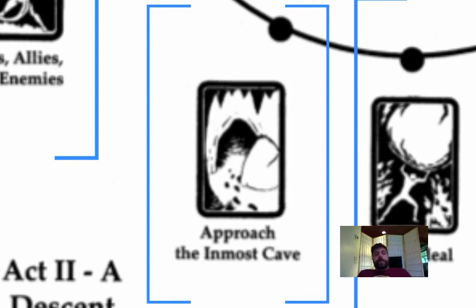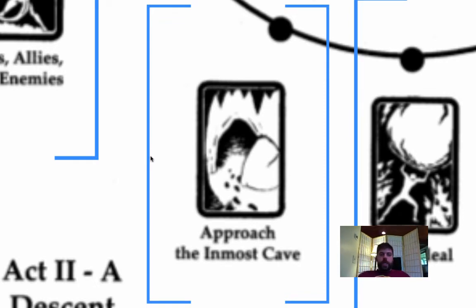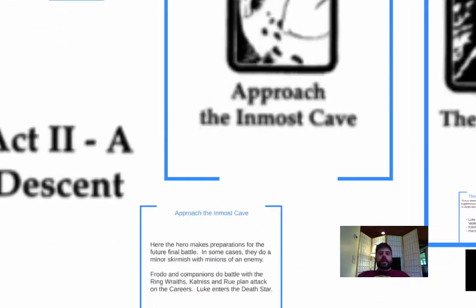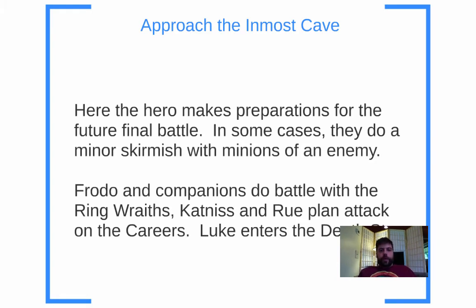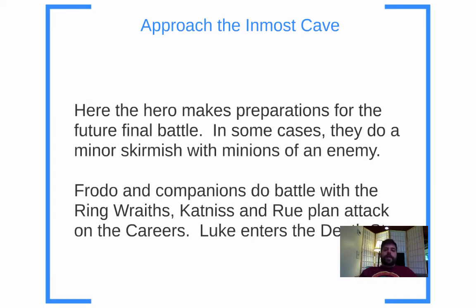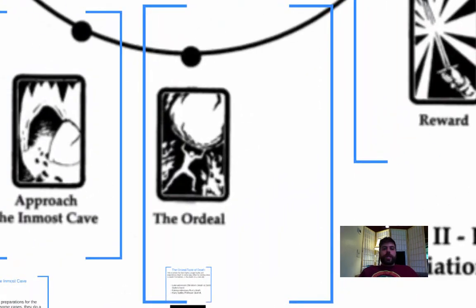The next step on the hero cycle is the Approach to the Inmost Cave — that's when the hero really knows things are going to get real. It's the entrance to the biggest conflict. The hero makes final preparations for the future final battle, and may do a minor skirmish with some minions of the enemy, but they're definitely getting ready for the big battle. Frodo and companions do battle with the Ringwraiths, Katniss and Rue plan an attack on the Careers, and Luke enters the Death Star — that's approaching the inmost cave.